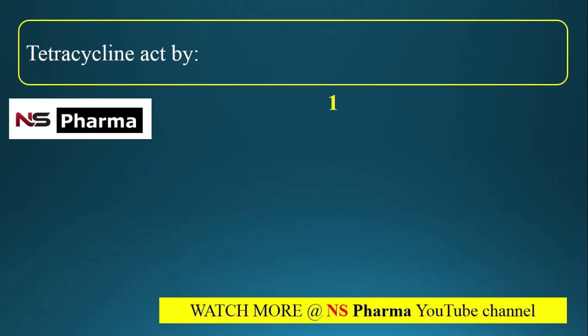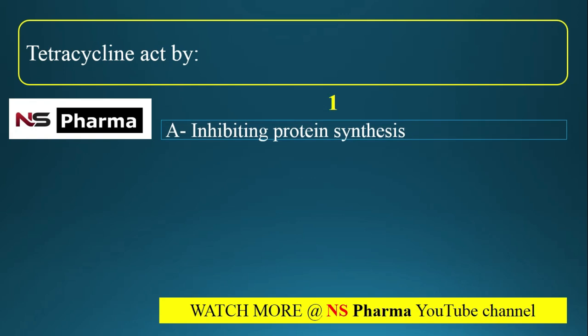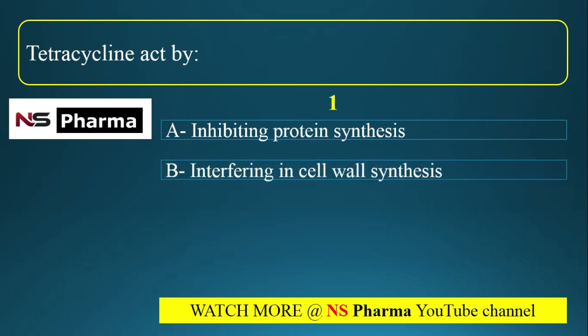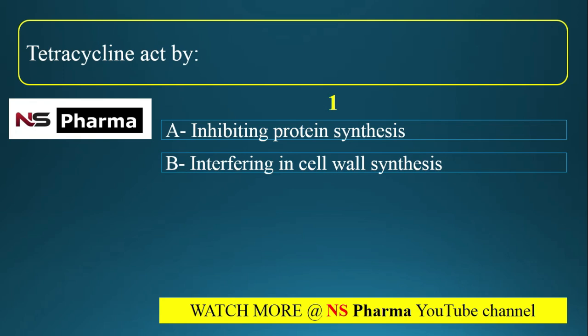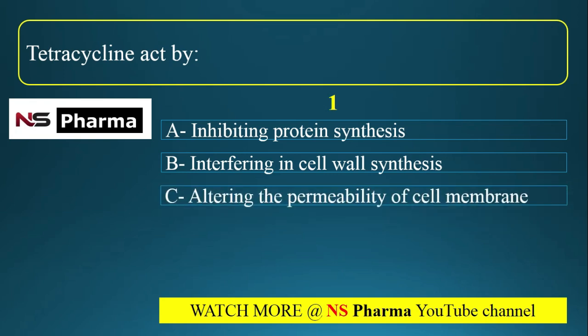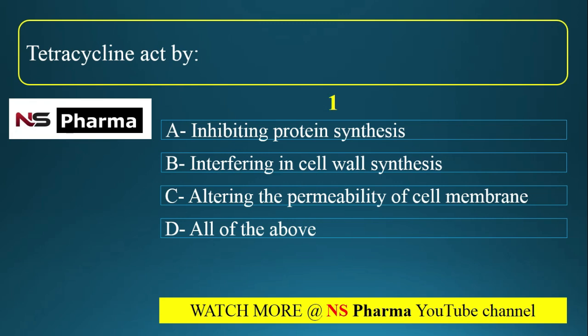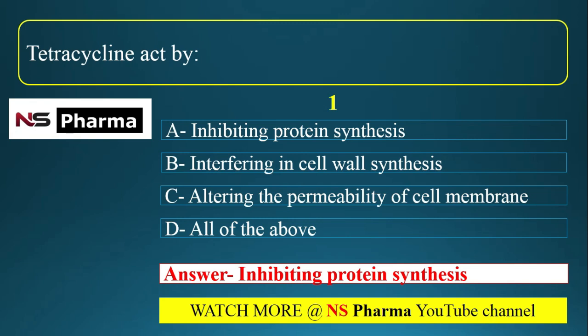First question: Tetracycline acts by — options are: (a) inhibiting protein synthesis, (b) interfering in cell wall synthesis, (c) altering the permeability of cell membrane, (d) all of the above. The answer is option A: inhibiting protein synthesis. Tetracycline acts by inhibiting protein synthesis.